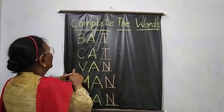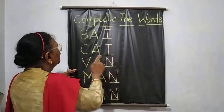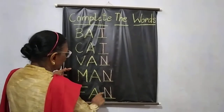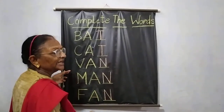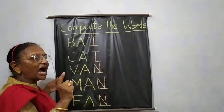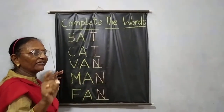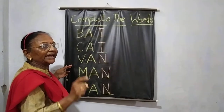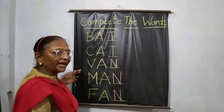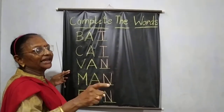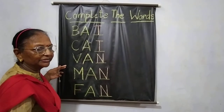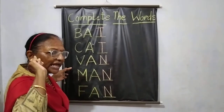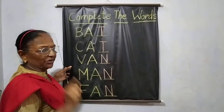Then you have B-A-N, van; M-A-N, man; F-A-N, fan; C-A-N, can; R-A-N, ran; T-A-N, tan. B-A-N, van. And like that you have words with the same sound.